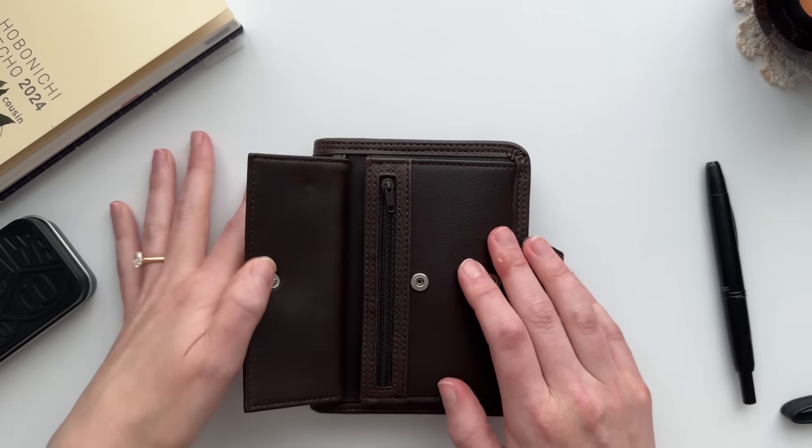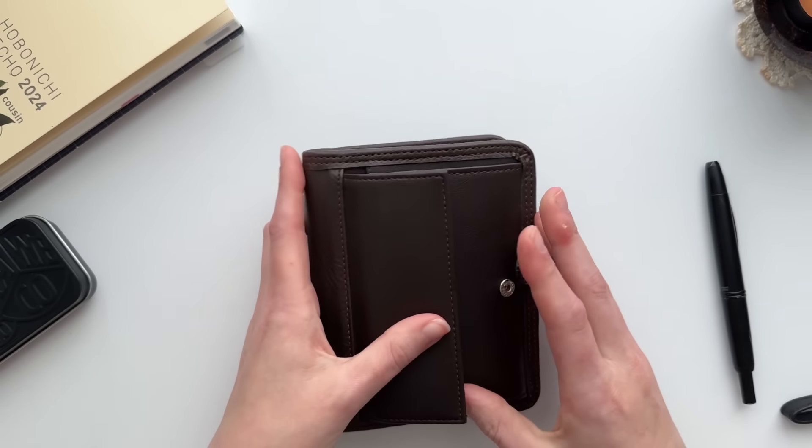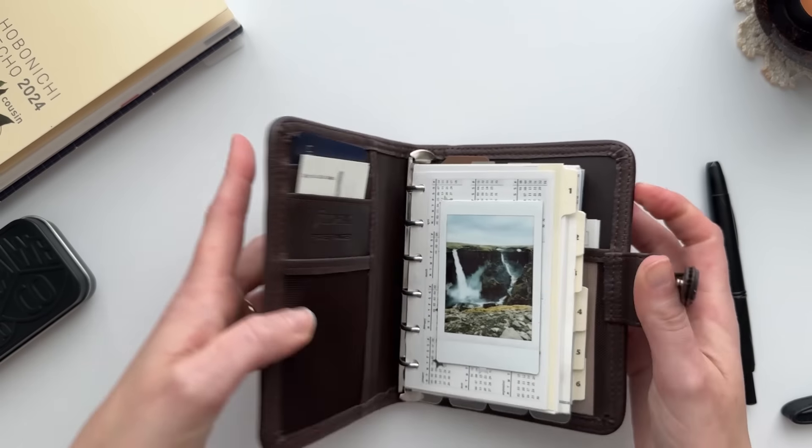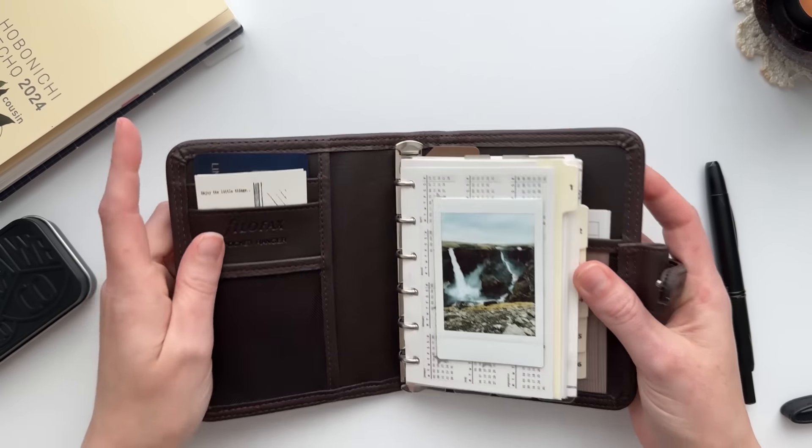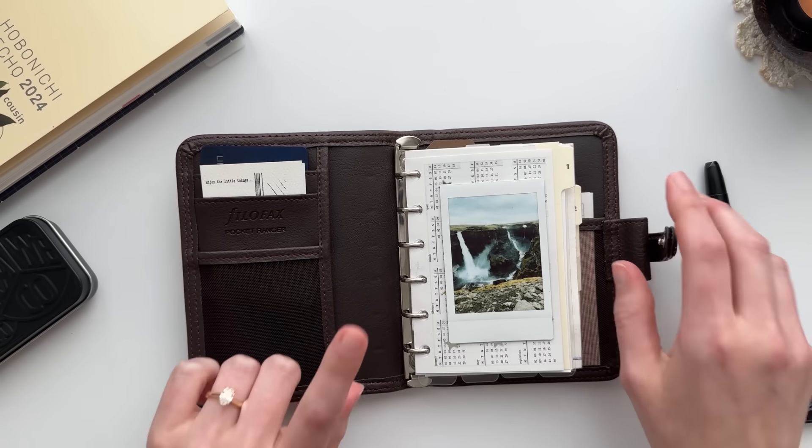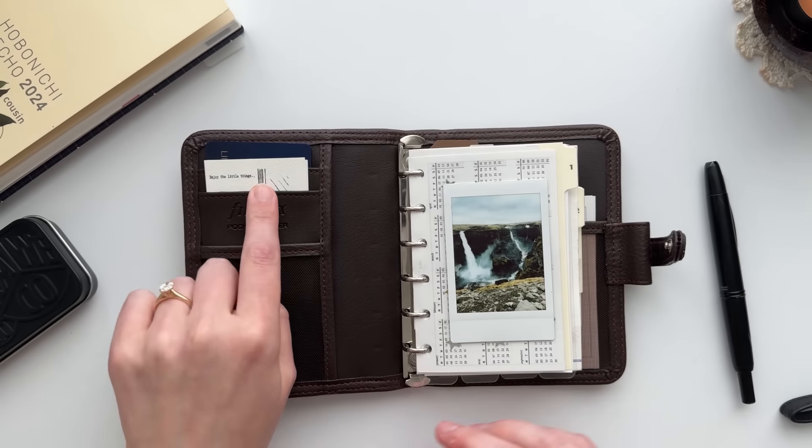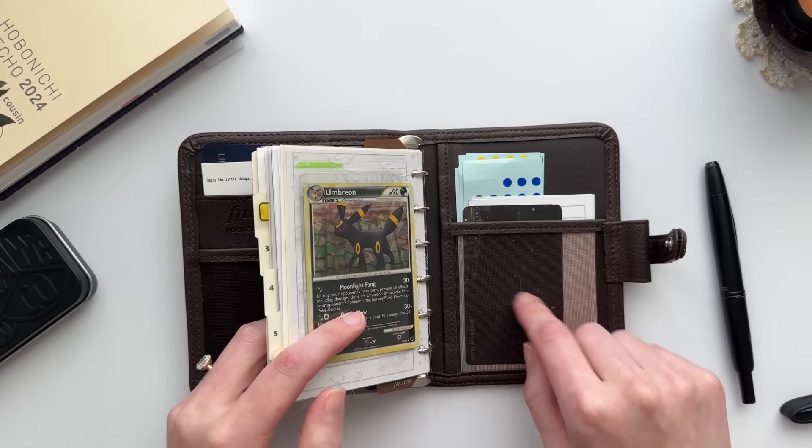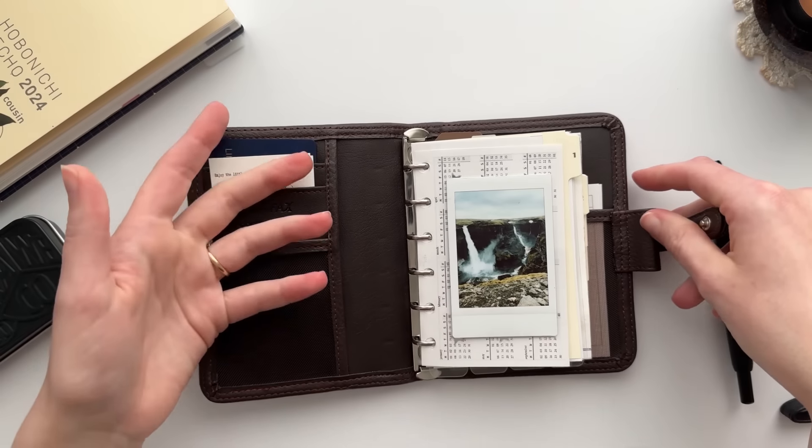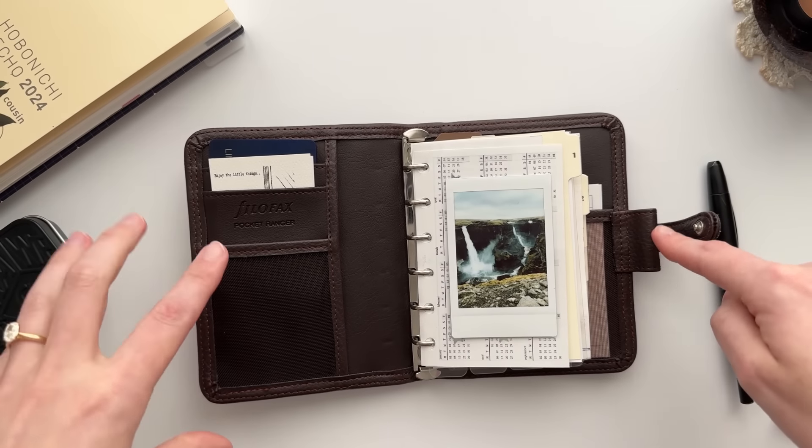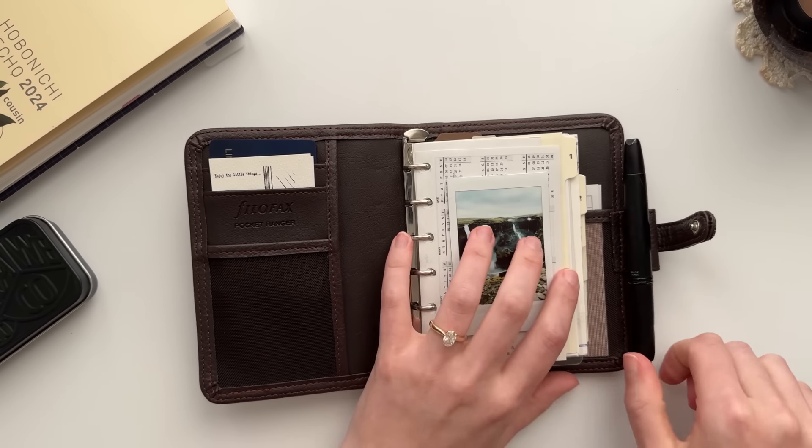I've got in the gusseted pocket just some credit cards, gift cards, some cash, coins, things like that. On the inside there are three card slots. This planner has a lot of pockets which I love - there's a slip pocket here, a mesh pocket, two credit card slots, a big mesh pocket, a big slip pocket, and then there's even a bonus slip pocket in the back.